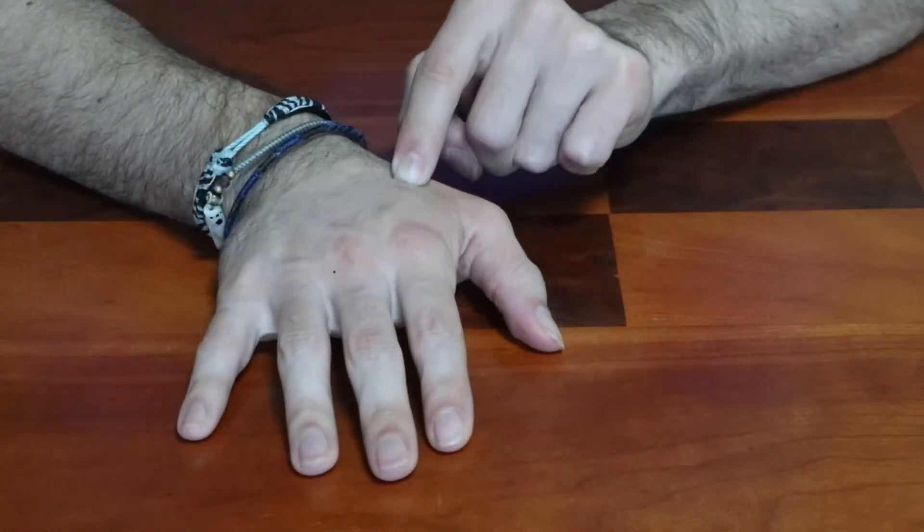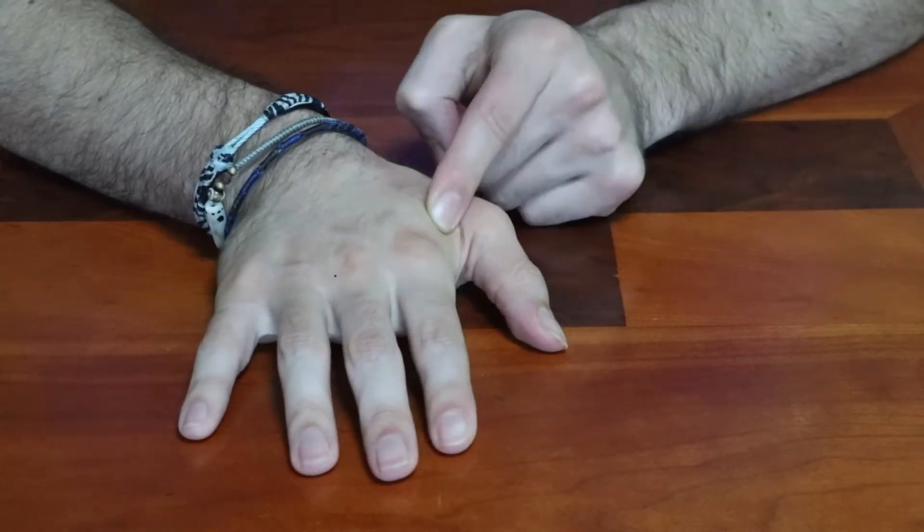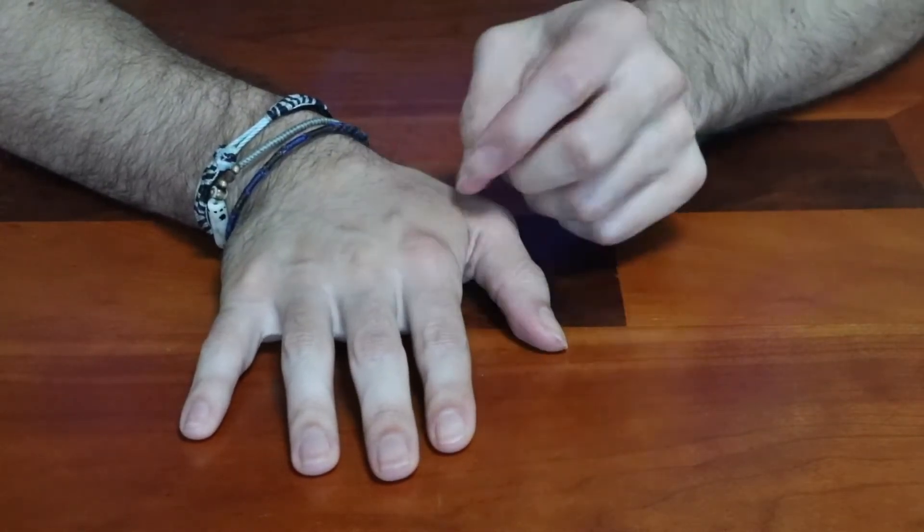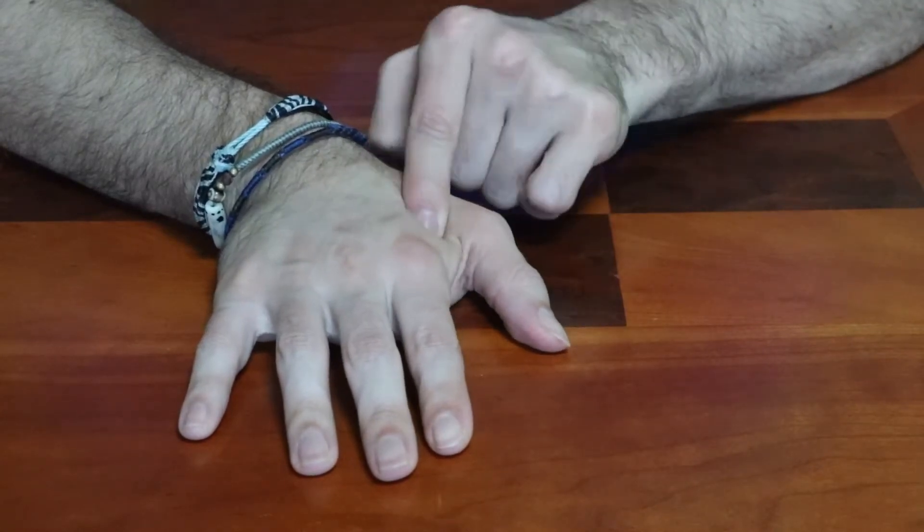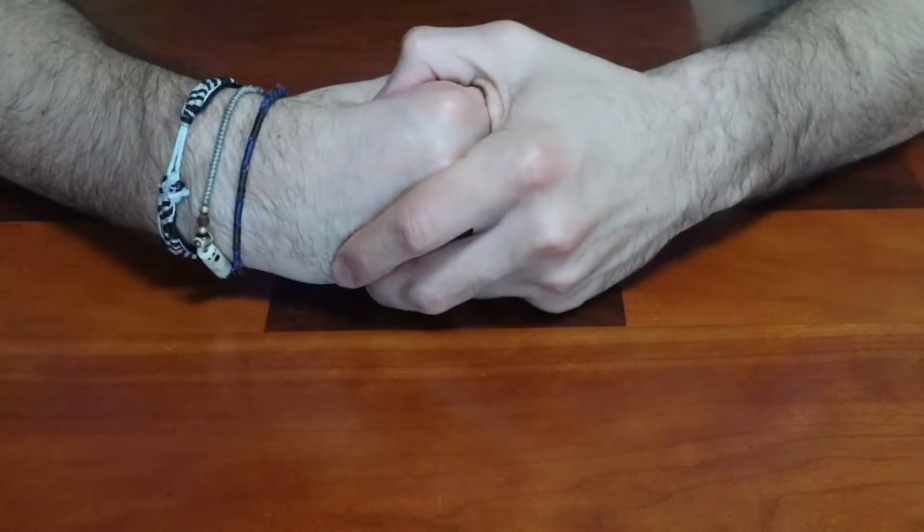The hand's a very intricate system. There's really a lot of connective tissue that allows for all the fine motor abilities that the hands can do.